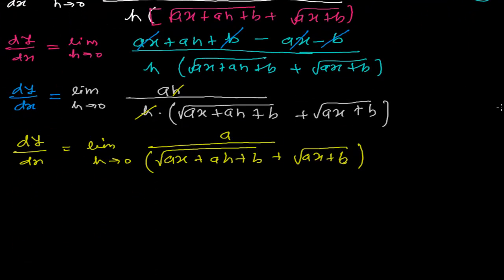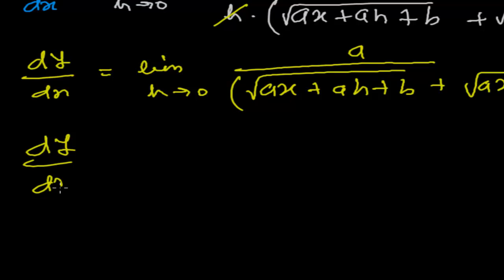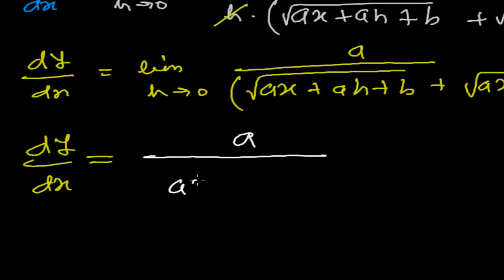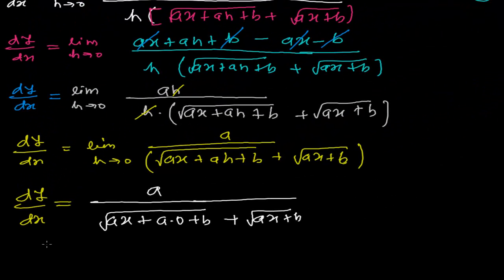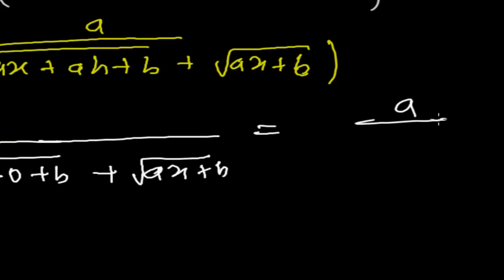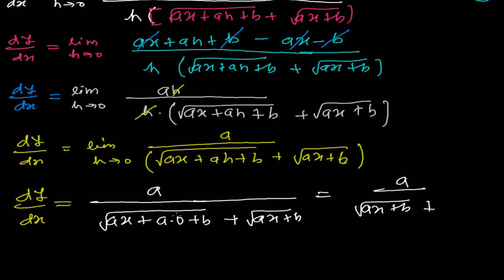Now if we plug in h tends to 0 — meaning h is almost zero — we won't get any problem. Inserting h equals 0, dy by dx equals a divided by root over ax plus a times zero plus b, plus root over ax plus b. Since a times zero is zero, this simplifies to a divided by root over ax plus b plus root over ax plus b.